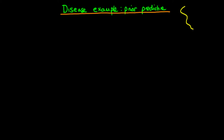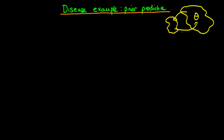Just to recap: we have some population, and within that population there is a certain fraction of individuals who have a disease, which we're calling theta. We only have a sample from that population and we're trying to do inference about theta, which normally means we come up with a posterior distribution for theta. The variable x represents the sum of individual Bernoulli trials — whether or not each individual has the disease — so x is the sum for all individuals in our sample of the individual disease status, which I'll call little x_i.